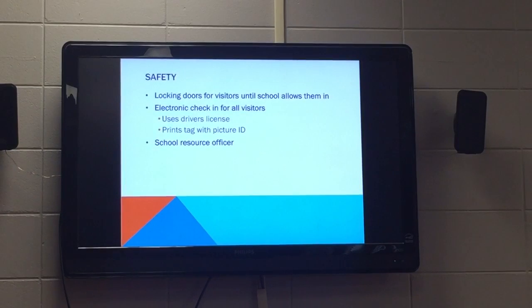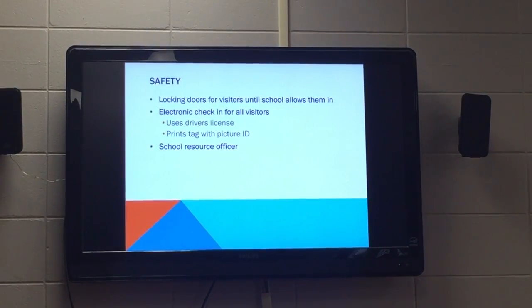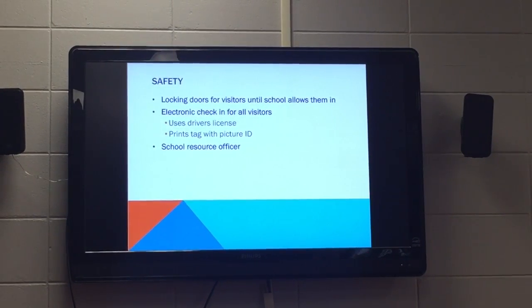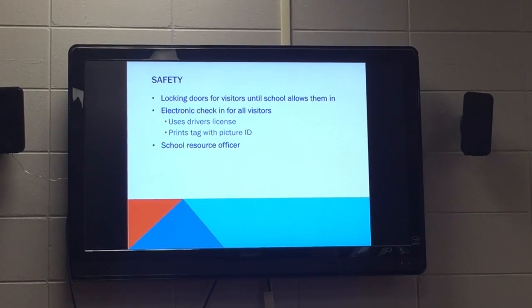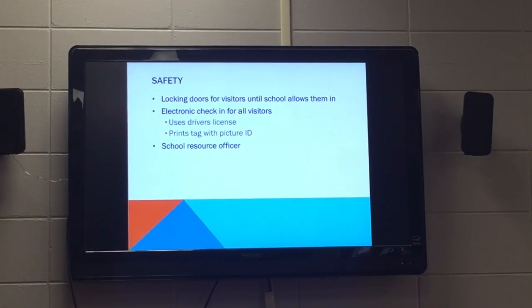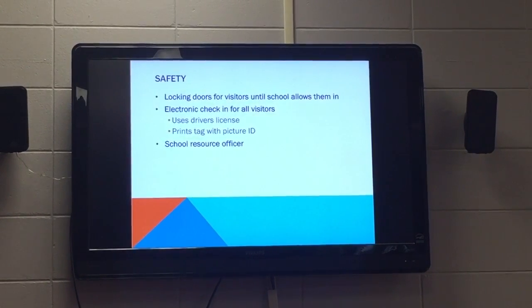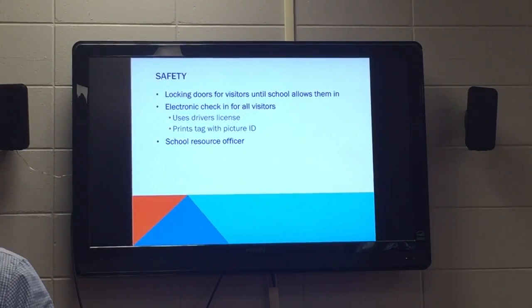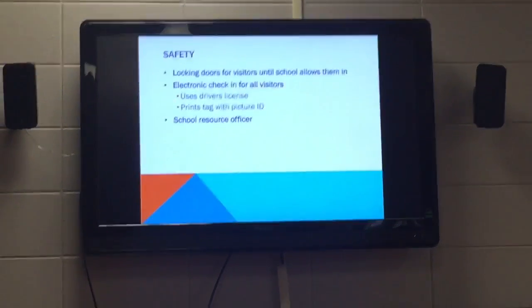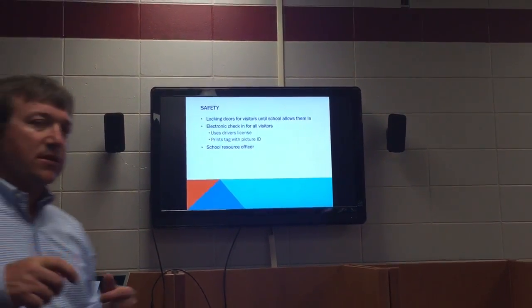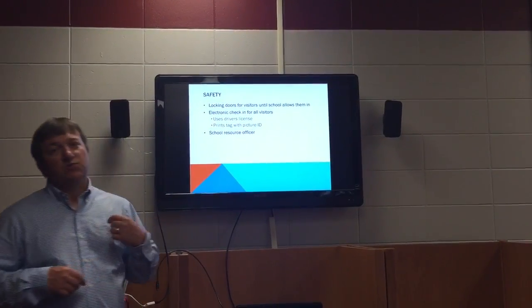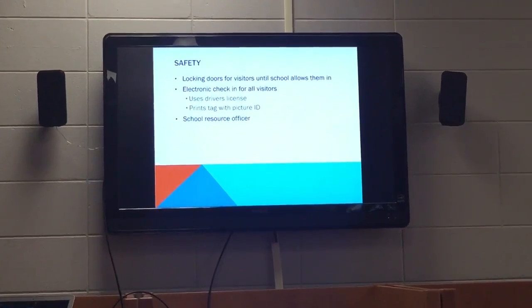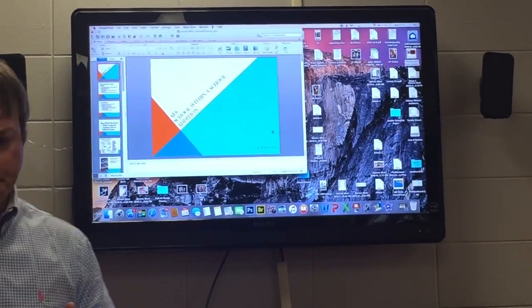For safety, there would be a resource officer on campus at all times with a police car parked out front — just having a uniformed officer there helps control a lot of issues. All exterior doors will be locked, and there would also be an electronic check-in system, basically a monitoring system for people coming in and out, where they run their license and it prints off a visitor's pass with their name. And that's pretty much all I have for designing the school with an unlimited budget. Thank you.